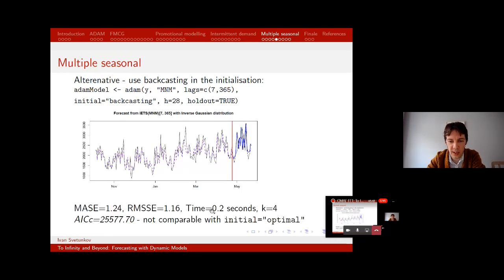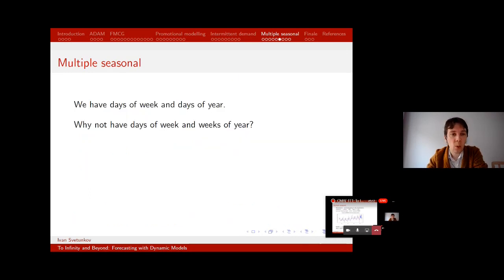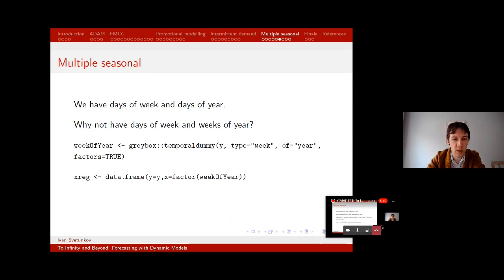OK, can we misbehave a bit more? Well, yeah, yes we can, obviously. You see, we have days of week and days of year in our model. And in a way, this is the information that is a bit sounds duplicate. So why not have days of week and then weeks of year? Because then if we have this split into two parts, we have less parameters to estimate and still this sort of model would be reasonable. So that's what I'm trying to do here. I just run a function from grey box, which generates factors for weeks of year. And I include this as explanatory variable in the model. So I experimented with this approach several times on different types of data and it worked quite well. In our case, I don't think it does better than the previous model. So we don't use backcasting here. We just optimize 62 parameters. 62 is much better than 300 whatever I had on one of the previous slides.